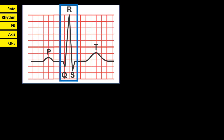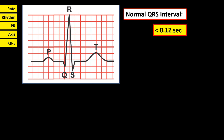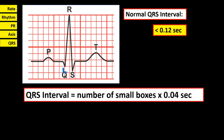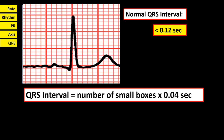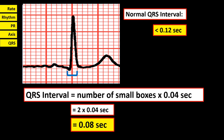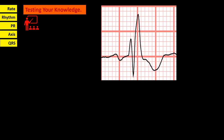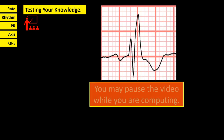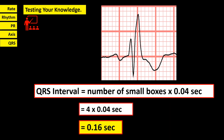We are done with rate, rhythm, PR interval, and axis. The next step is to determine the QRS complex. The QRS complex has three components: the Q wave, the R wave, and the S wave. Normal QRS interval is less than 0.12 seconds, or less than three small boxes. To determine the QRS interval, count the number of small boxes from the start of the Q wave to the end of the S wave, and multiply by 0.04. In this ECG tracing, there are two small boxes, so the QRS interval is 0.08 seconds, which is normal. In this other example, if your answer is 0.16 seconds, which is prolonged, then you got it right.